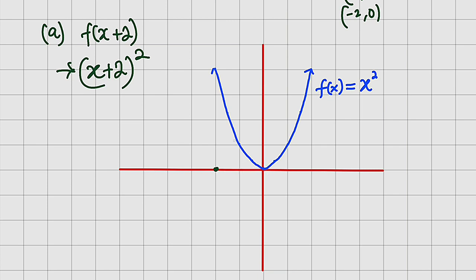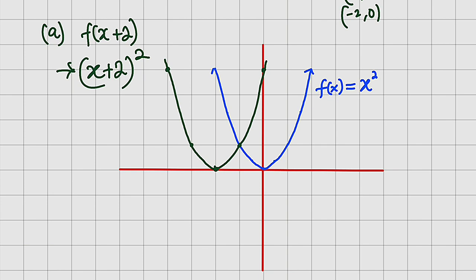Do the same thing for all other points — shift each one two units to the left. We have shifted the graph two units to the left. Let us connect all the points. So now we have just constructed a graph of x plus 2 whole squared without constructing an entirely new graph. We have transformed the mother function into the new transformation. I can call it y equal to x plus 2 whole squared.